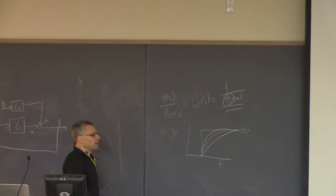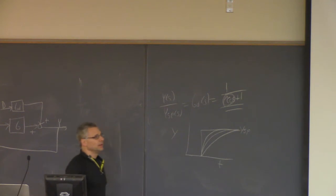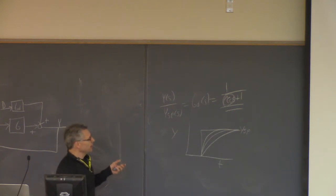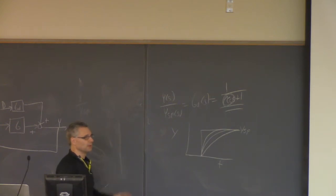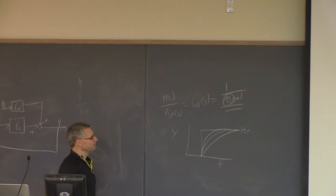Now you can think of the tuning problem as simply: figure out what you'd like tau_c to be. It's much cleaner. Before, with a PI controller and three parameters, you didn't know how they affected the response. You'd plug them in, take the inverse Laplace transform, and see if you liked what you got. Now you specify what you want and you're guaranteed to get it — as long as the model is perfect.